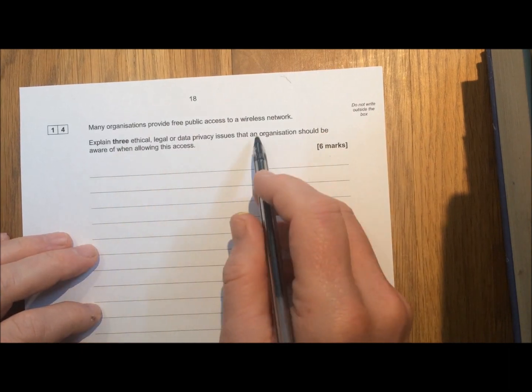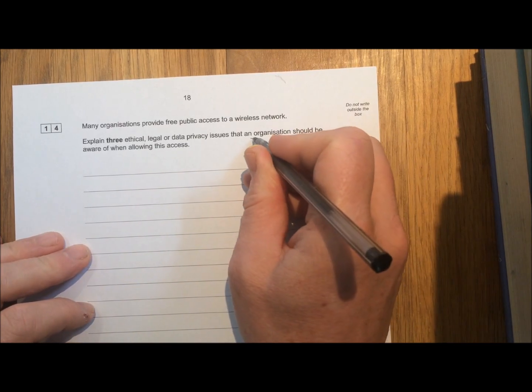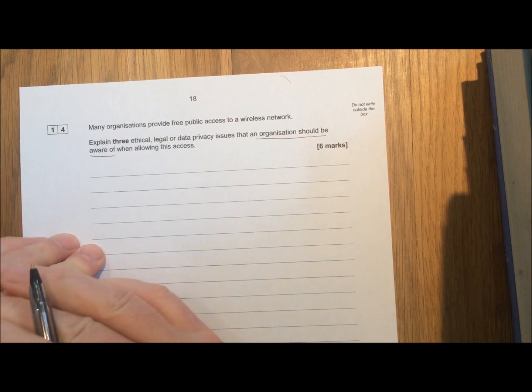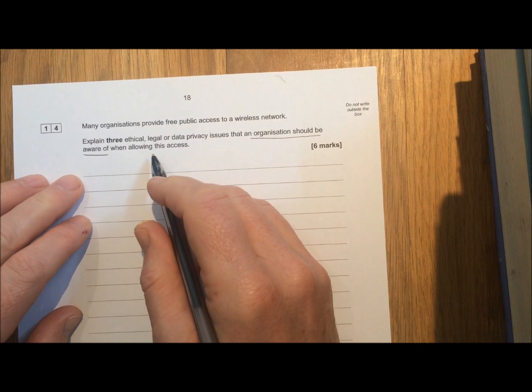Now, we need to explain the issues that an organisation should be aware of. We're not talking about issues to do with the person who's accessing the network. We're talking about the issues that the organisation needs to be thinking about.